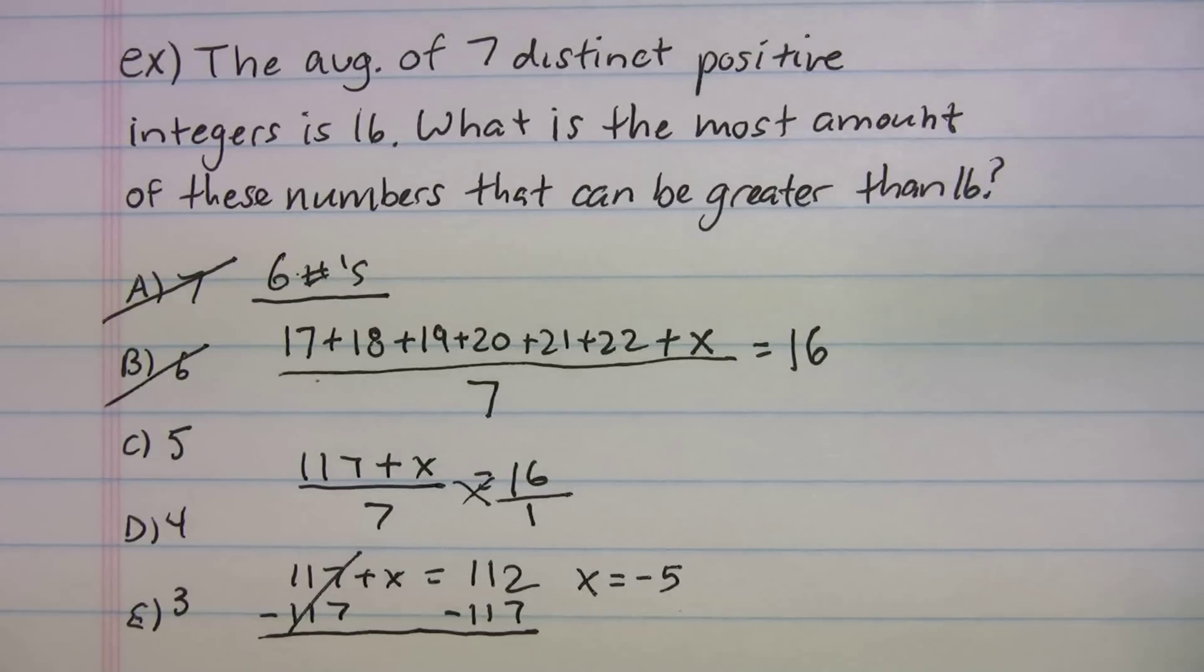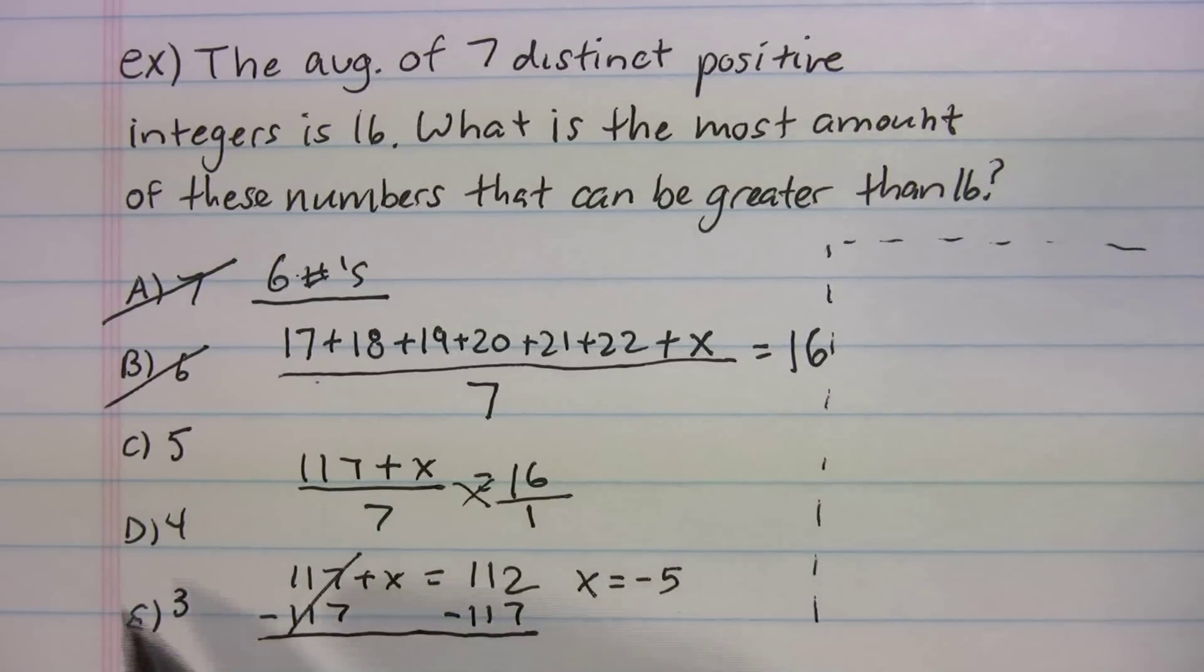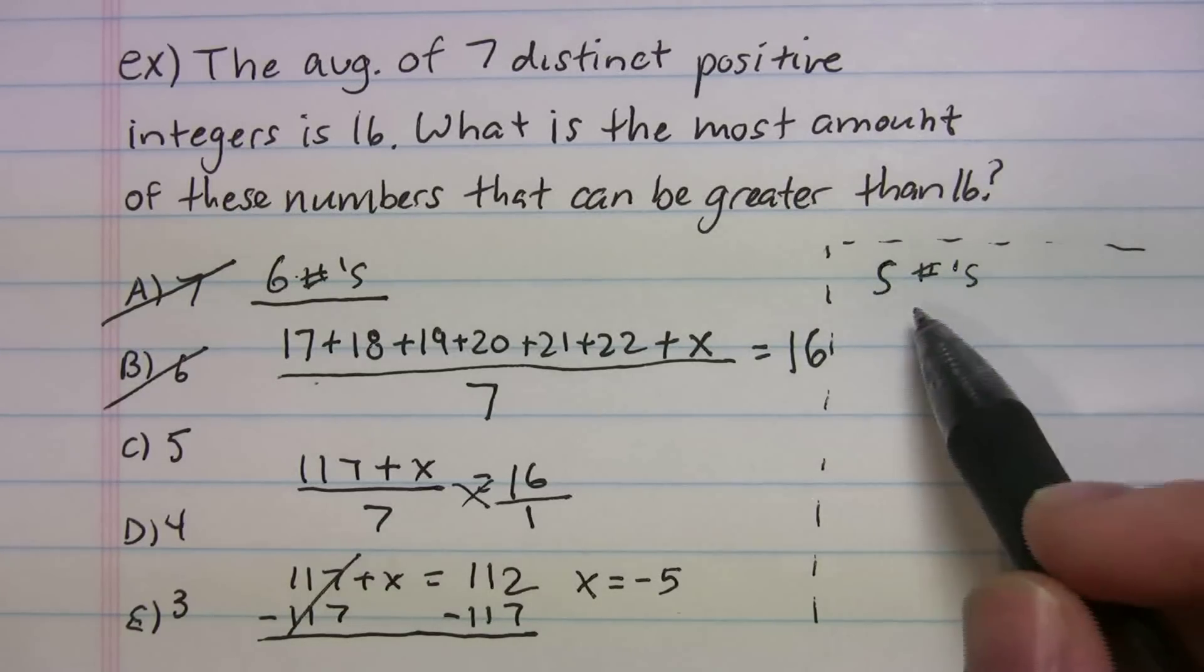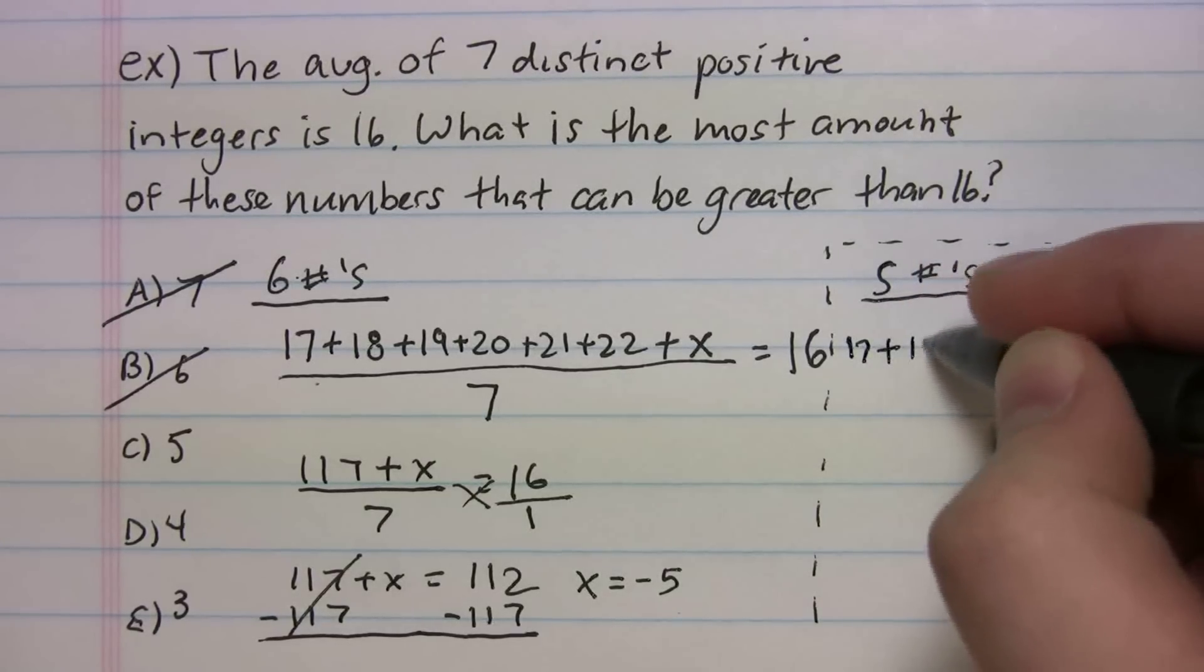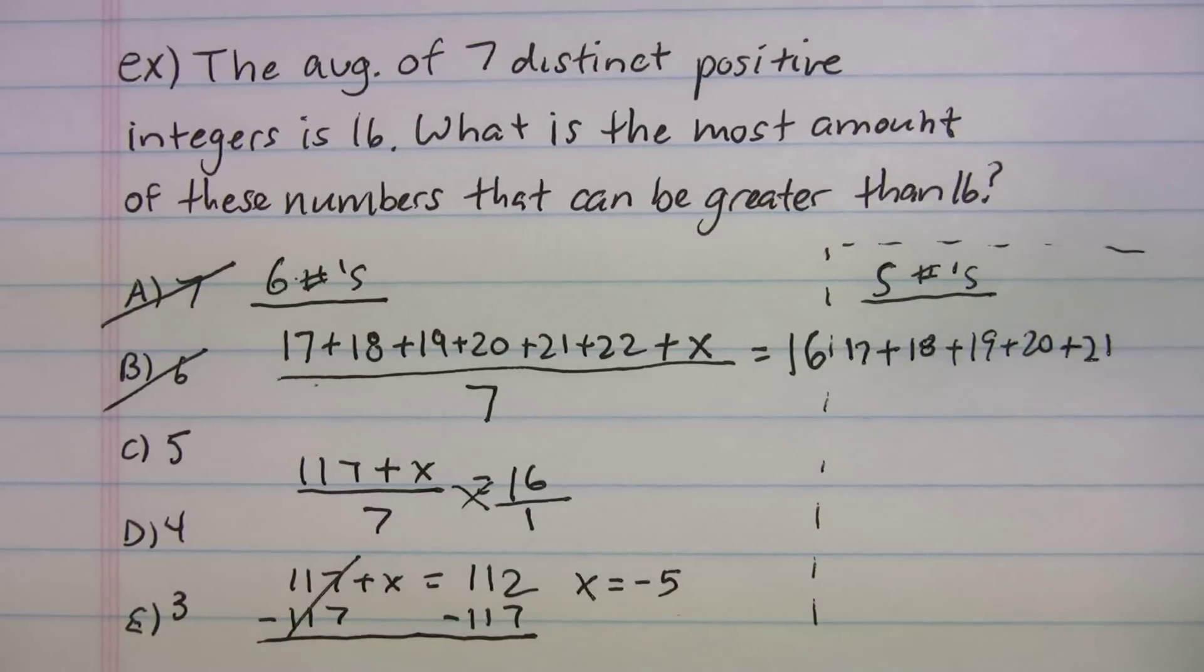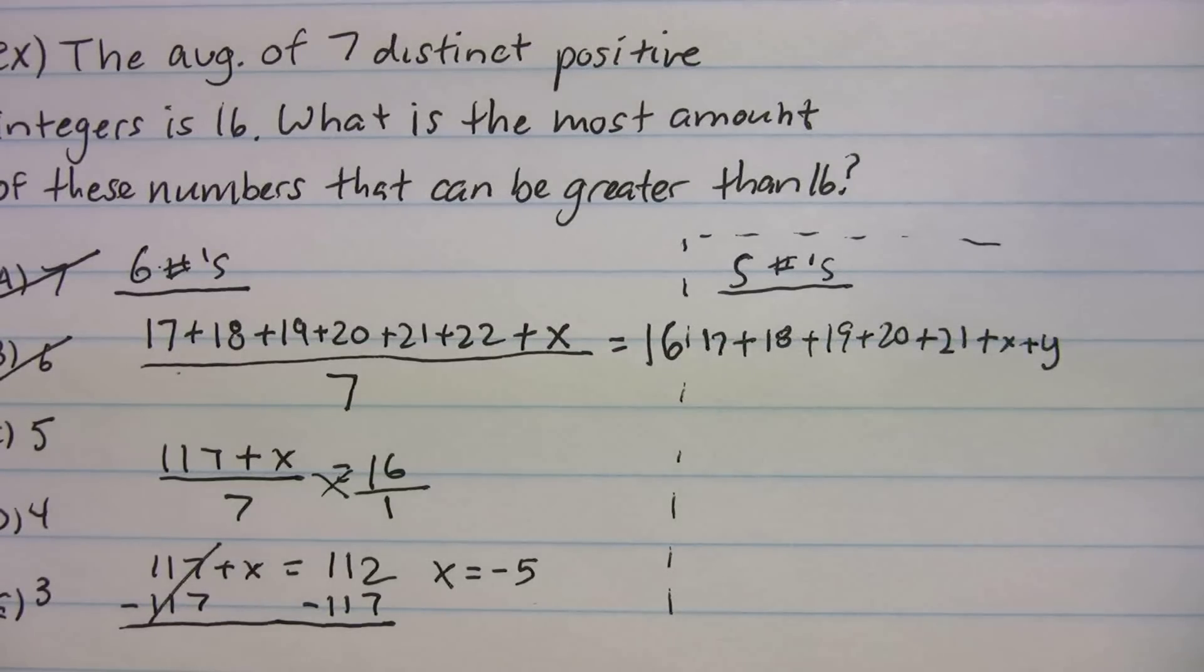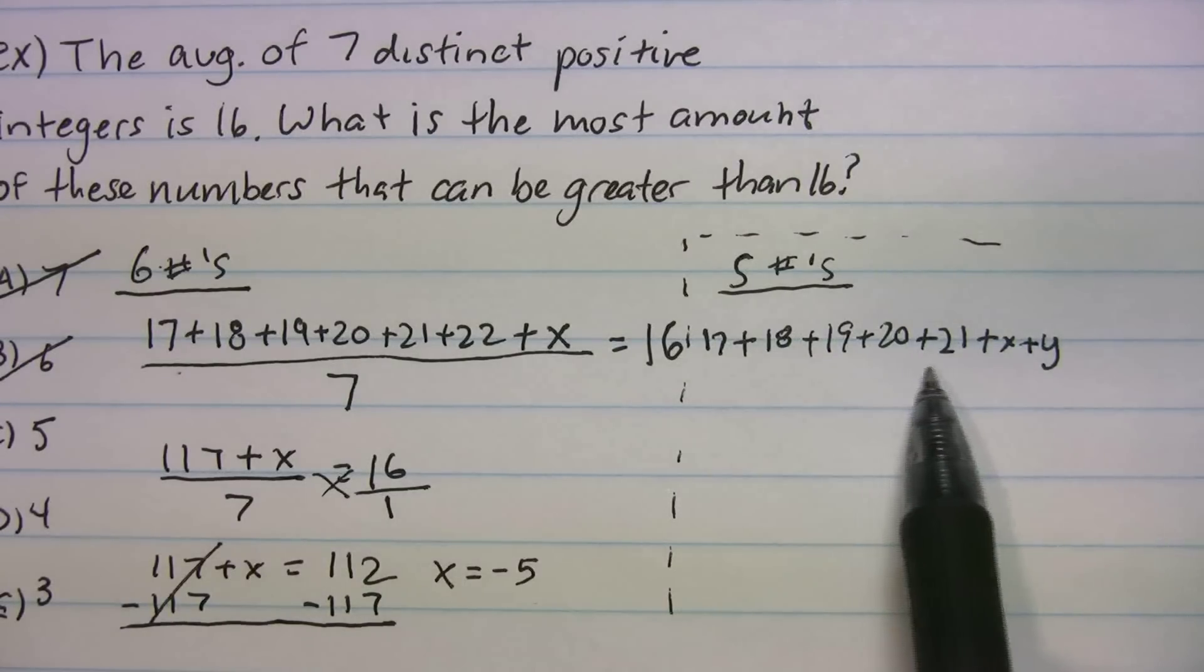Now I'm getting a little scrunched on space here. Hopefully I can get this done without you guys losing your eyesight here. Let's try five numbers. So I'm going to put five numbers here. So it says the average, let's look at five numbers that can be greater than 16. So that's going to be 17 plus 18 plus 19 plus 20 plus 21. That's only five numbers. We still have two more plus x plus y. So let me just move it over. So there's our numbers. We have the five above, and then we have x and y.